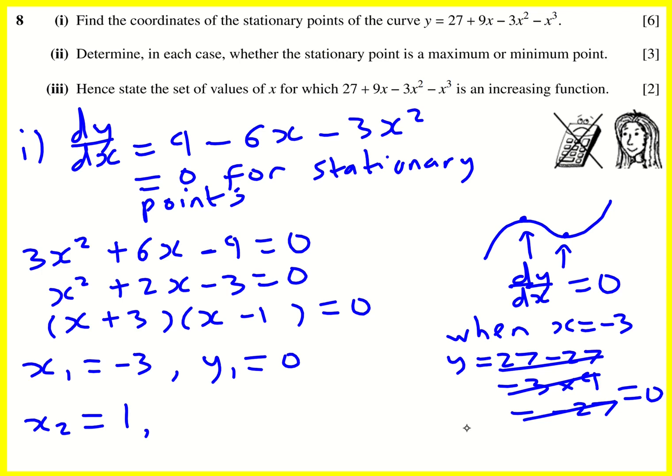When x2 is 1, we'll get 27 plus 9 minus 3 minus 1. So it's going to become 36 minus 4. It's going to be 32. And I found the coordinates. I could write them directly in terms of the normal coordinate form. But this is fine as well.